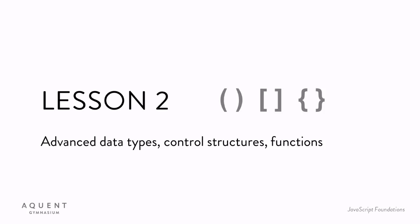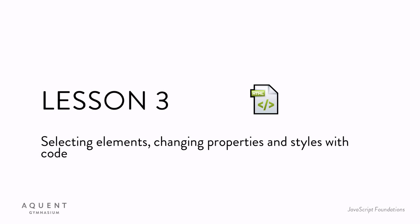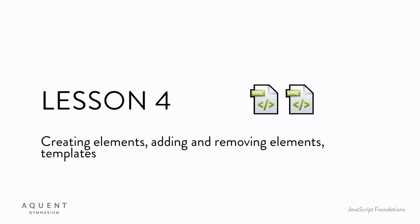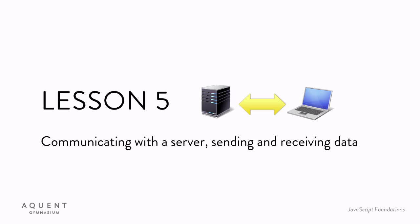In Lesson 2, I'll build on that, introducing more complex data types and control structures, and how to make your code do things by creating your own functions. In Lesson 3, you'll learn how to use JavaScript to interact with the HTML page itself by selecting elements on the page, then how to set and get various properties of elements, and how to set and get the style of any element on the page. Lesson 4 will show you how to create HTML elements, add and remove them from the page, and create and use HTML templates to dynamically populate an HTML page or portion of a page. Lesson 5 will cover sending data to and receiving data from a server, allowing your page to interact with the outside world.